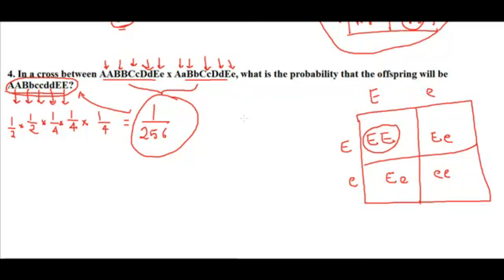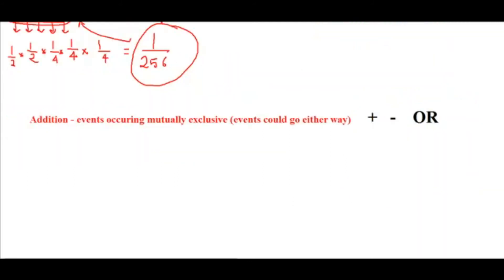Now let's take addition. We use addition in genetics when events are mutually exclusive — meaning the event could go either way, either this or that could happen. How do you know to apply the addition rule? By the presence of the word 'or' in the question. Let's take a few examples to understand.